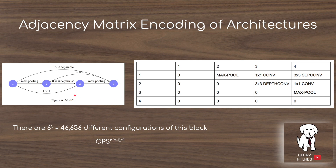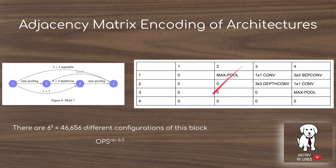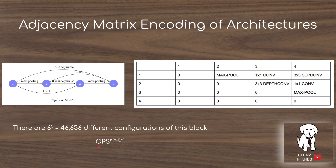With motif 1, there are six different operations — like max pooling and convolution — to choose from, and five different slots to fill with different operations. Overall, there are about 46,000 different ways to assemble motif 1. This can be computed as the number of low-level operations raised to the power of n(n-1)/2, where n represents the 4 nodes in the motif.